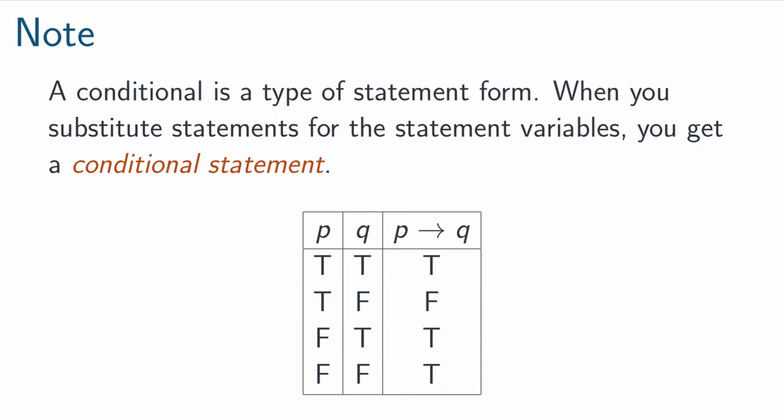And here we have the truth table for any basic conditional statement form. As you can see, the only case that's problematic is the second row, where P is true but Q is false, which would make this statement, if P then Q, false. All of the other cases get trues.